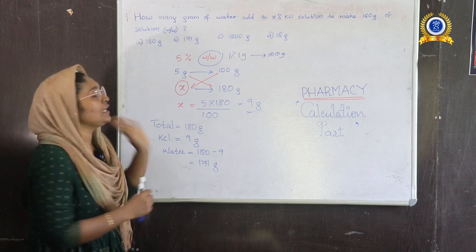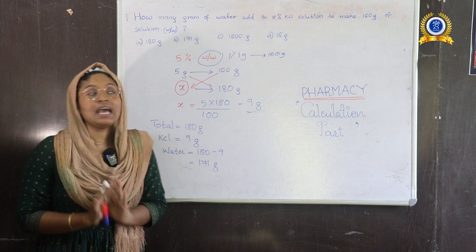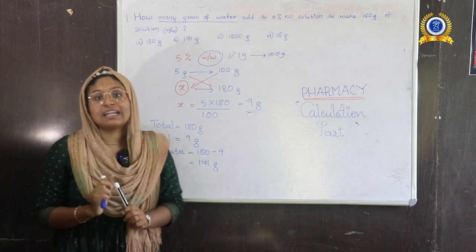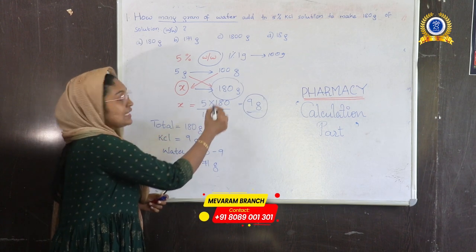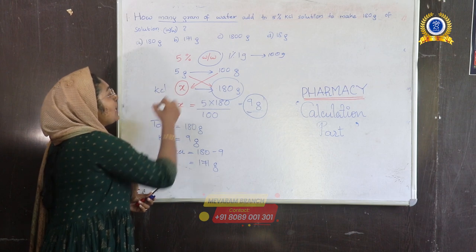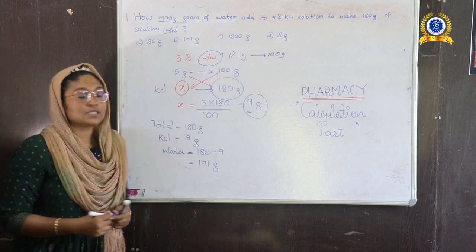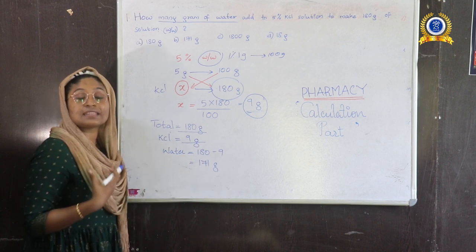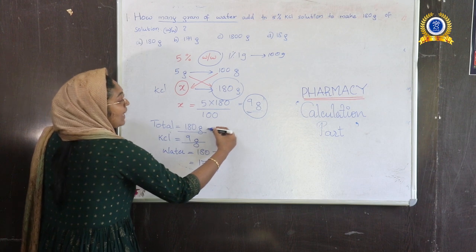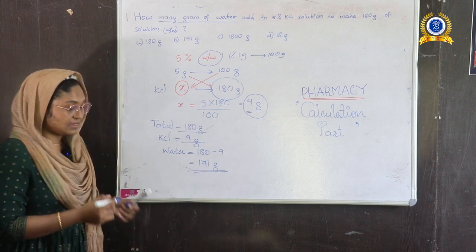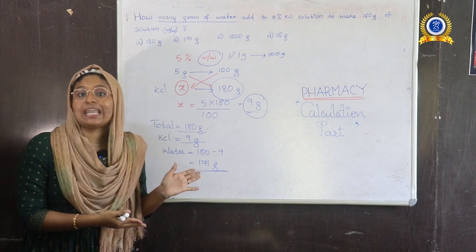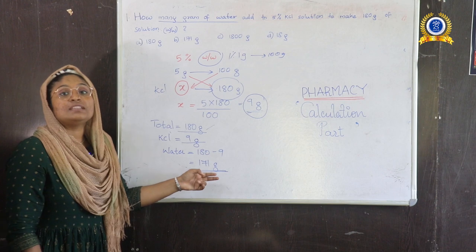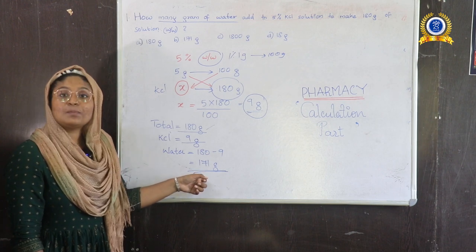We need 9 grams of KCl in the total 180 grams of solution. So the amount of water to be added is 180 minus 9, which equals 171 grams. The answer is 171 grams.